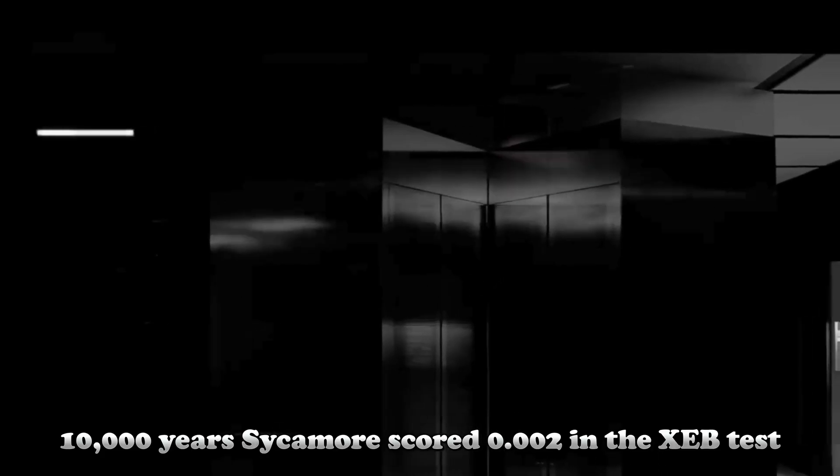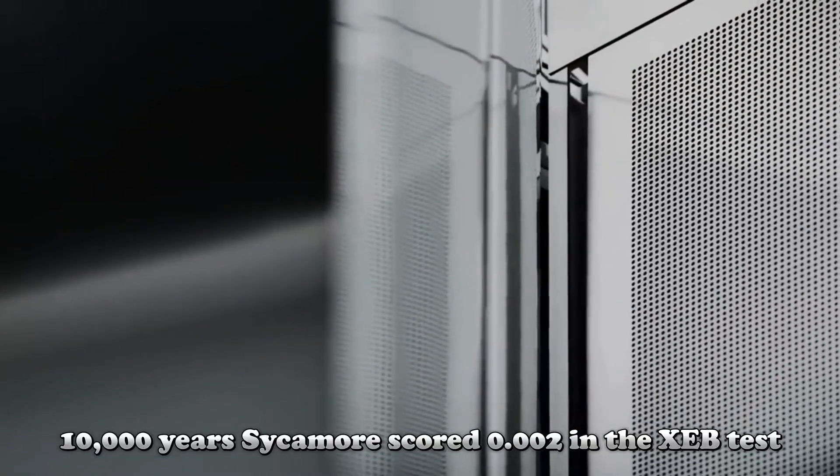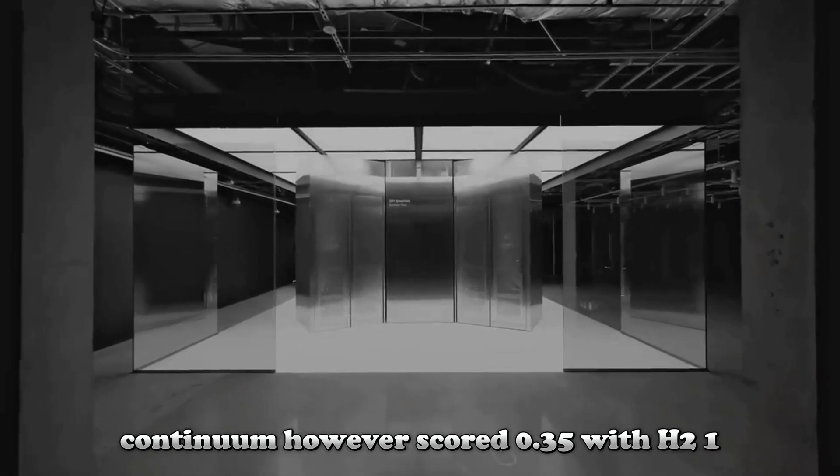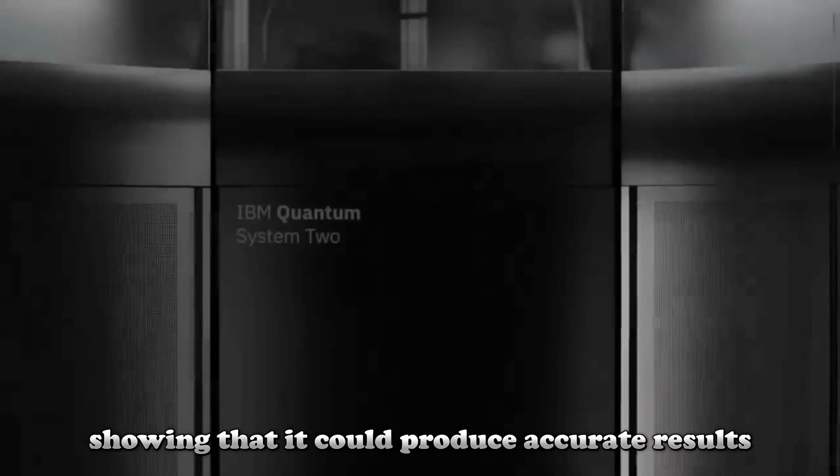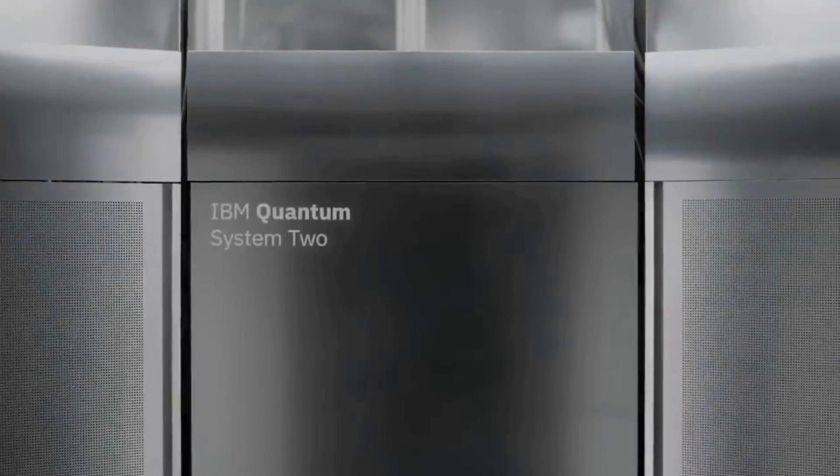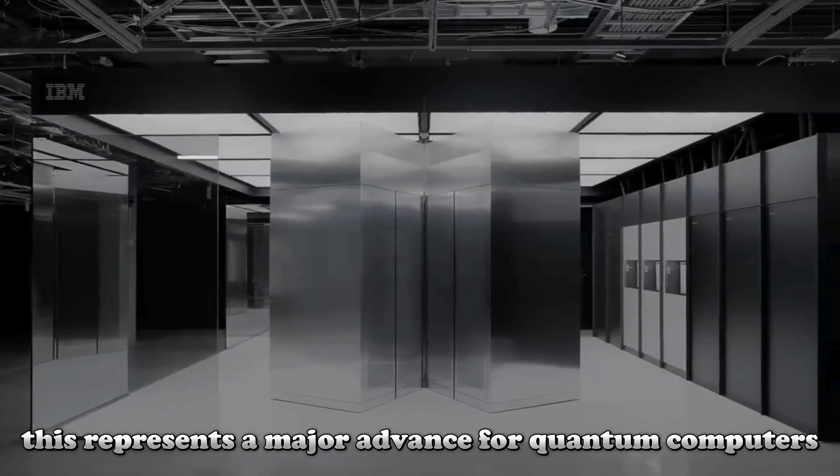Sycamore scored 0.002 in the XEB test. Quantinuum, however, scored 0.35 with H21, showing that it could produce accurate results with a 35% error rate. This represents a major advance for quantum computers.